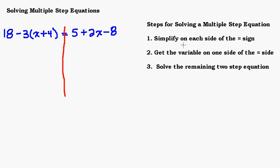Step one is to simplify on each side of the equal sign. I'm going to focus on the left hand side. Hopefully you recognize this as the distributive property — we have to take negative 3 times the quantity x plus 4, so negative 3 has to be multiplied by both x and 4. Remember, subtraction is the same as adding a negative. If distributing a negative 3 is uncomfortable, you may want to change the minus to plus a negative.